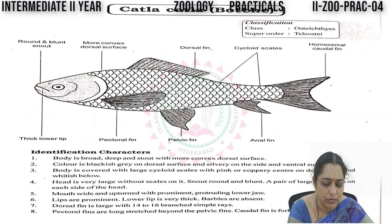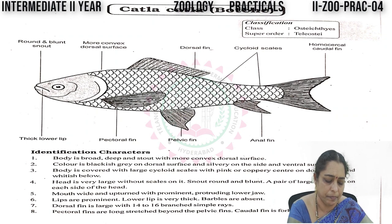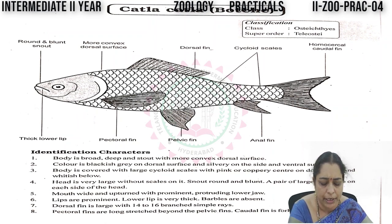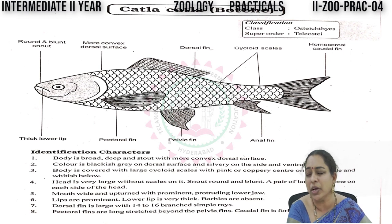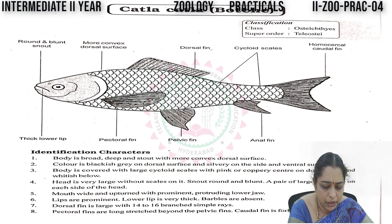The head is very large without scales on it. The snout is round and blunt. A pair of large eyes is present on each side of the head. The mouth is wide and upturned with a prominent protruded lower jaw — this is another unique feature of Katla katla or bocche fish. The lips are prominent, and the lower lip is very thick. Barbels are absent.